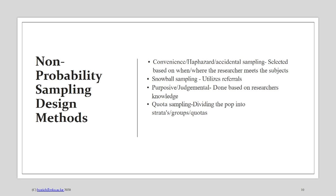Snowball sampling is subjective because the referral person can decide to pick only their friends and leave out others who might have given better answers. Purposive or judgmental sampling is done with the knowledge of the researcher — for example, I know Jane as the VC of Mount Kenya University and Mike as the VC of Jomo Kenyatta University, and I purposely go and target them.